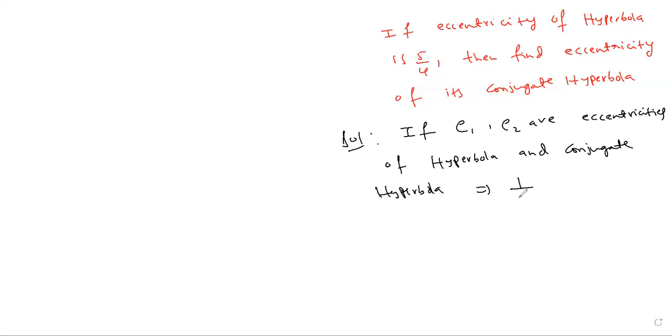That implies 1 by e1 square plus 1 by e2 square equals 1.